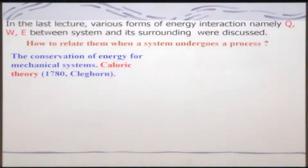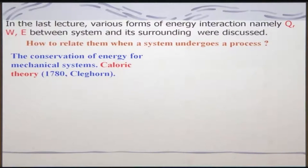Let me give a little historical perspective. Until 1780, when Clegghorn gave a theory known as the Caloric theory, it was already known about the conservation of energy for mechanical systems. But people were not having much idea about what heat is. Clegghorn was the first person to give this theory. According to it, heat is like an elastic fluid having no weight, and it is conserved.